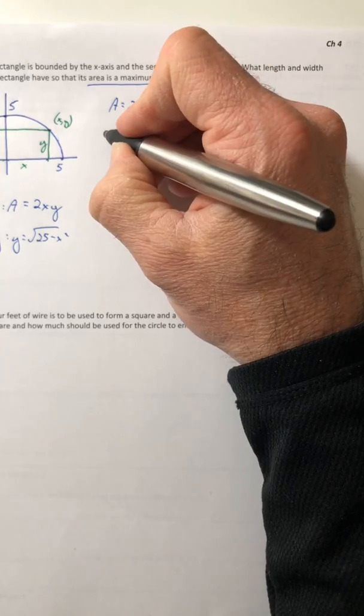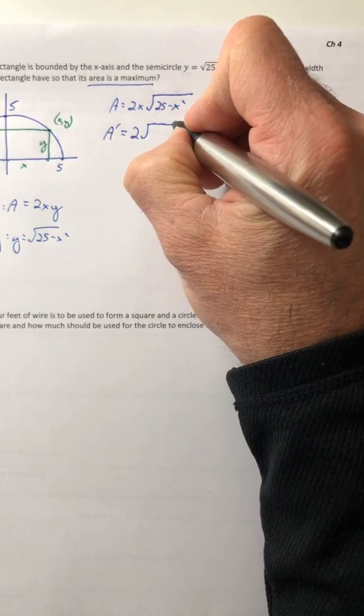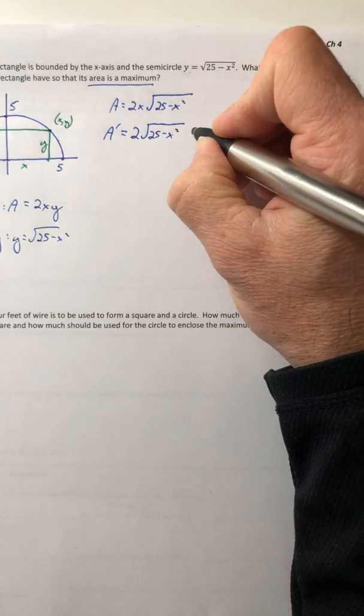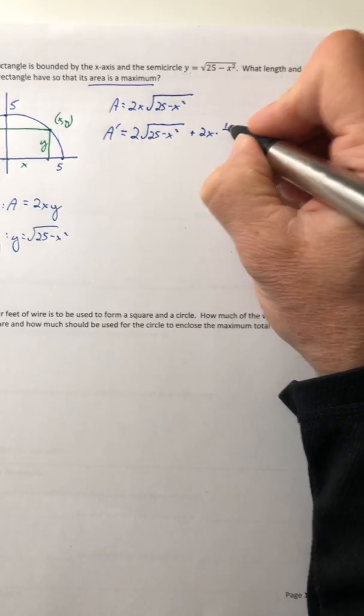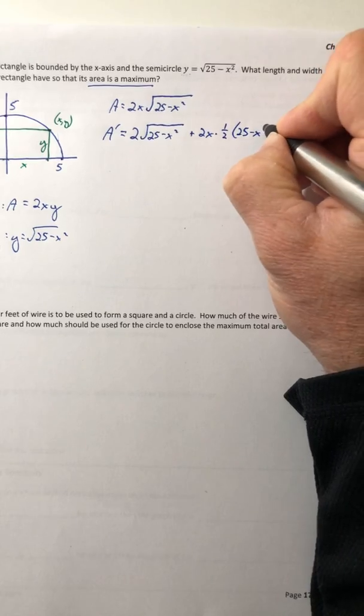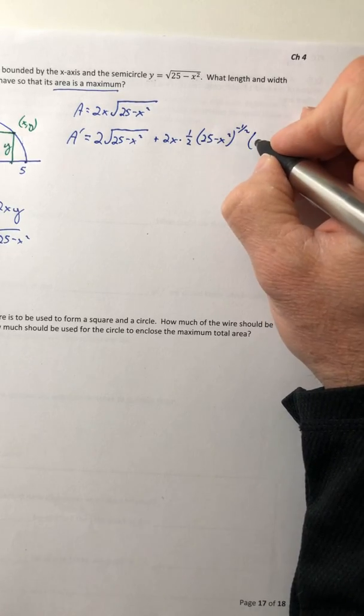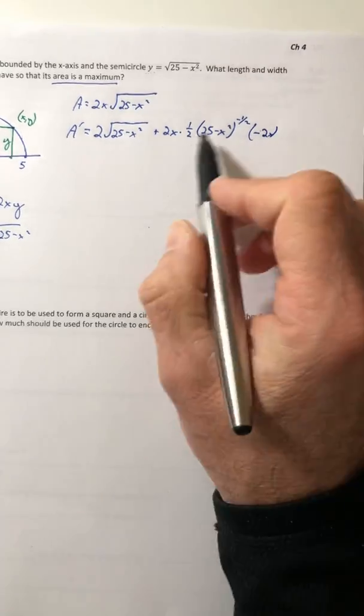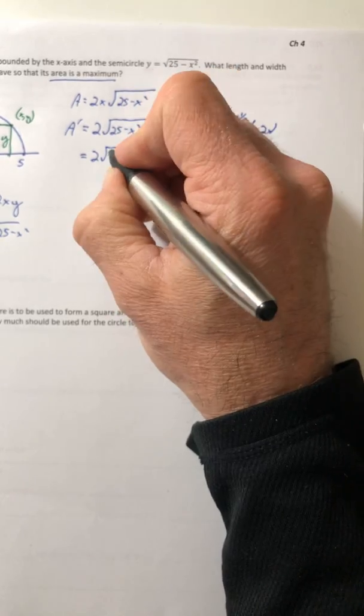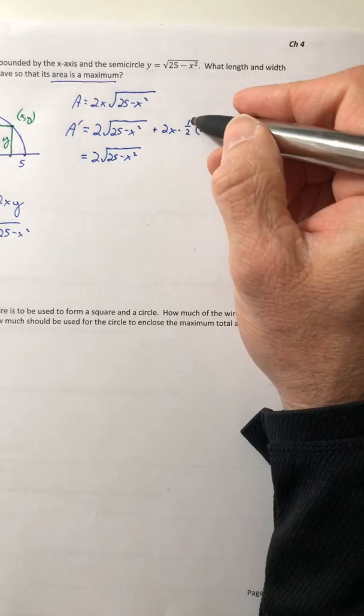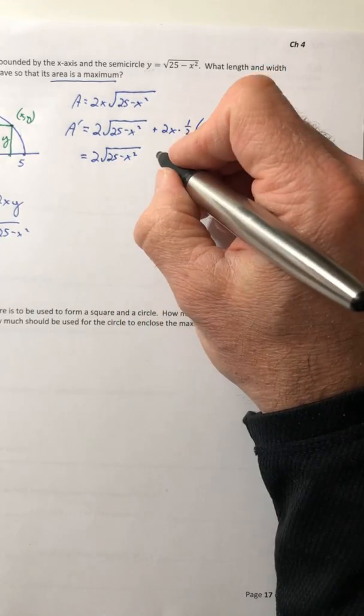And I'll do the derivative of this guy, which means I have to use the product rule. So the derivative of 2x would be 2. The square root stays the same. Then plus the 2x and the derivative of the square root. So 1 half, 25 minus x squared to the negative 1 half times the derivative of the inside, which would be negative 2x. So we're going to clean this up before we start solving it. So I'm going to clean it up just like we've done in class. So like the half and the 2 can cancel. And negative x times the negative 2x is just negative 2x squared.